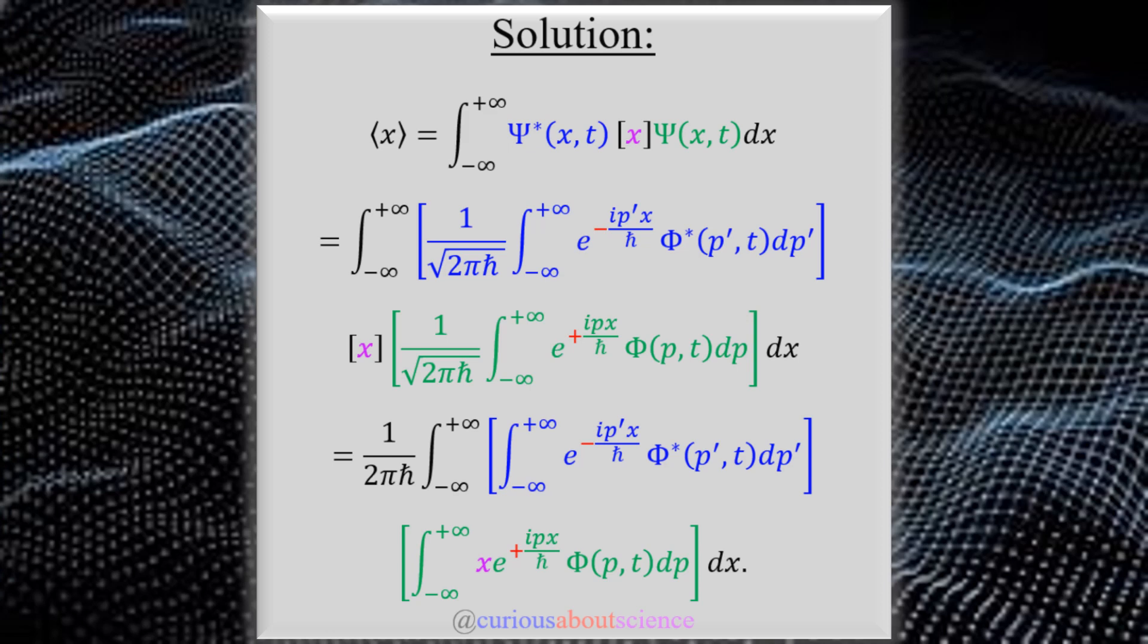If we start with our general definition of the position wave function or the expectation with respect to the position wave function, you see here blue and green because of the conjugate there, x is just nice and neat here, we like that, no big deal.